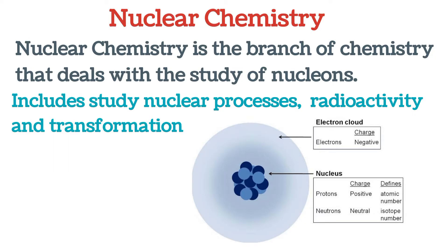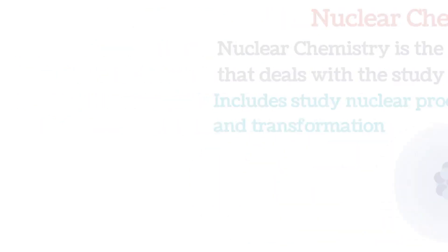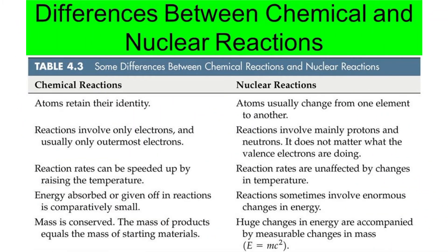Protons carry a positive charge and neutrons are neutral. In nuclear chemistry we are studying protons and neutrons, whereas in other branches of chemistry like inorganic chemistry, organic chemistry, and physical chemistry, they are all associated with electrons. Now we are going to look at the differences between chemical reactions and nuclear reactions.